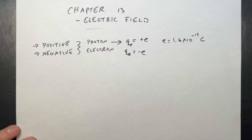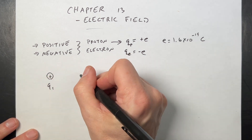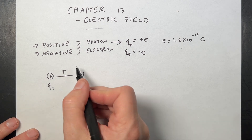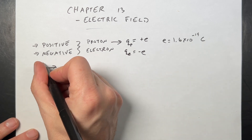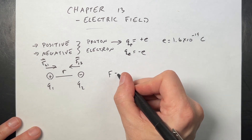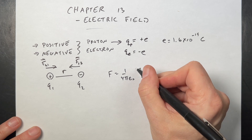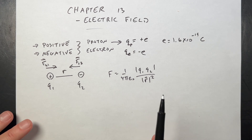You've seen things like like charges repel and unlike charges attract. We can get an expression for the interaction between two charges. Suppose I have a plus charge Q1 and a minus charge Q2 separated by distance R. Then the force — F1 on 2 and F2 on 1, which are the same by Newton's third law — has magnitude equal to (1 / 4πε₀) × |Q1||Q2| / |R|². That gives the magnitude of the force; we'll get a vector version later.